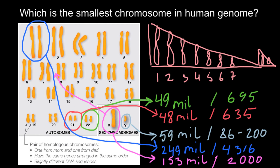To emphasize: chromosome number 21 is the smallest, but the Y chromosome has the smallest number of genes. There are actually only two important genes on the Y chromosome that define maleness and testis development. The Y chromosome is the only chromosome whose absence is easily tolerated — females don't have it and feel perfectly fine. One of the important genes on this chromosome is SRY — the sex-determining region on the Y chromosome.